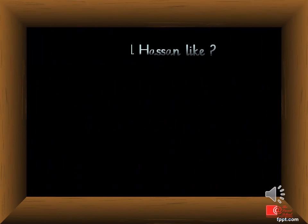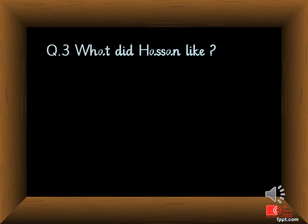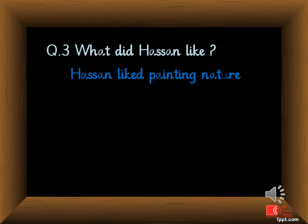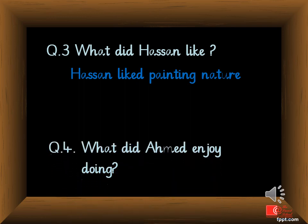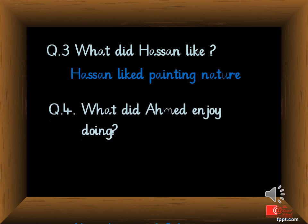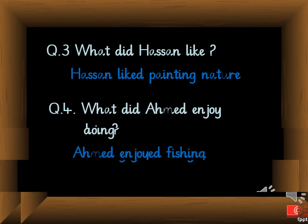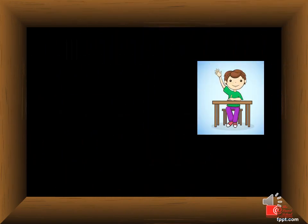Question 3: What did Hasan like? Answer: Hasan liked painting nature. Question 4: What did Ahmed enjoy doing? Answer: Ahmed enjoyed fishing. Question 5: How many fish did Ahmed catch? Answer: Ahmed caught one fish.